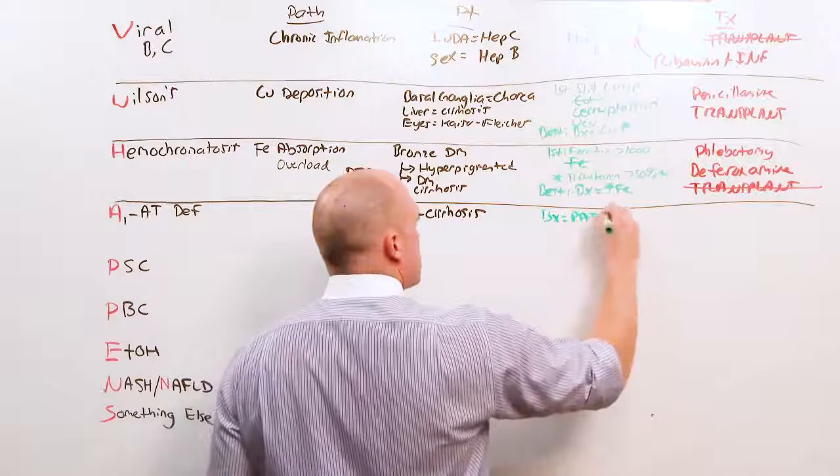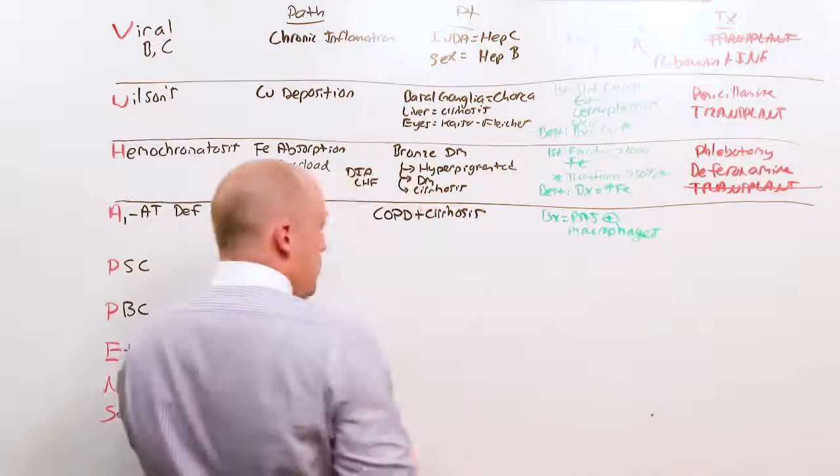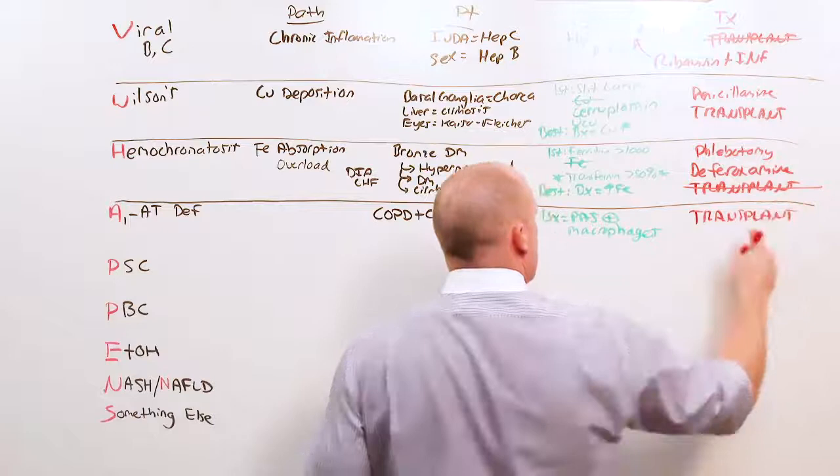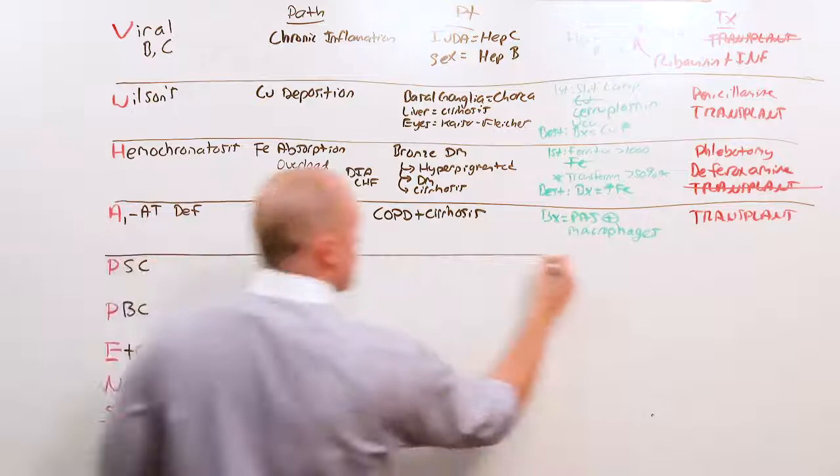The diagnosis is made by biopsy, and you'll see PAS positive macrophages. The treatment is transplant. While the damage to the lung is already done, because it's a problem with the liver, if you transplant this patient, you give them a new liver, the alpha-1 antitrypsin can get out, and you prevent further degradation of the lung.